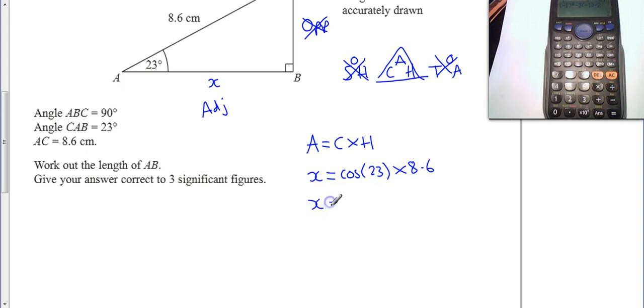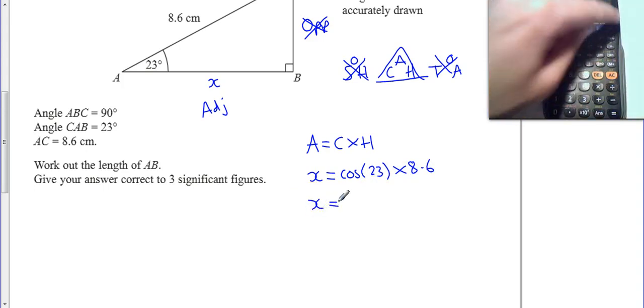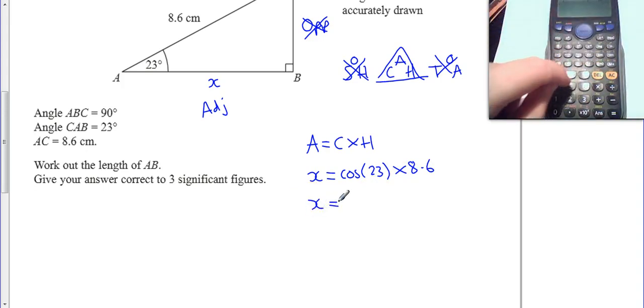And then I've just got to tap that into my calculator. Now, one thing, if you are tapping into your calculator, cos 23, make sure you close your bracket afterwards, times 8.6, and then I get that number 7.91634174.